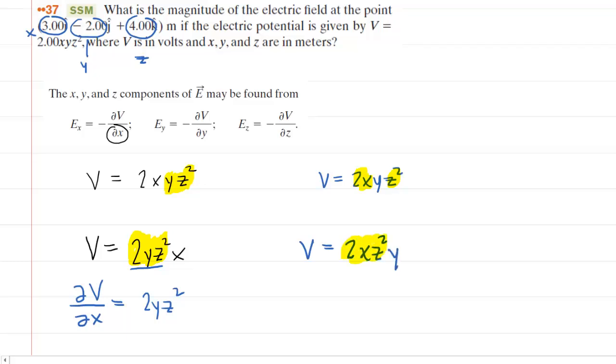So you can rewrite them in front as 2xz squared and then multiplied by y. Once again, all of this is a constant. So when you compute the partial derivative of the potential with respect to y, you end up with just that constant, 2xz squared.